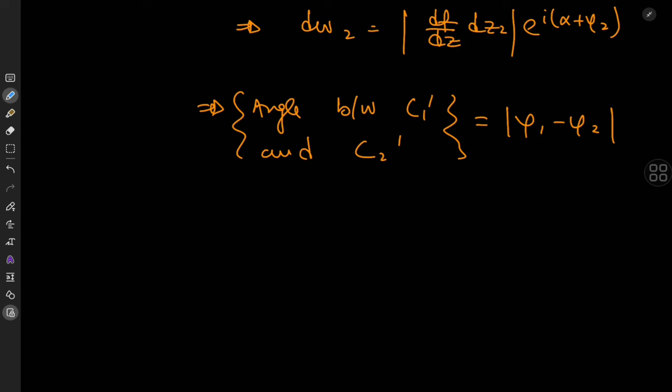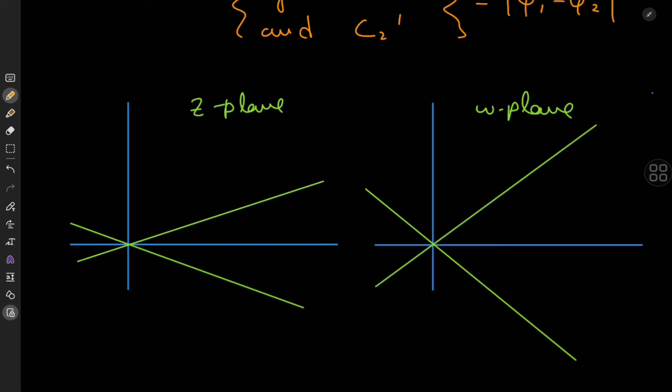Let me give you an example of how a vanishing derivative means that angles will not be preserved. This time for the z plane I'm considering two straight lines c1 and c2 that intersect at the origin.